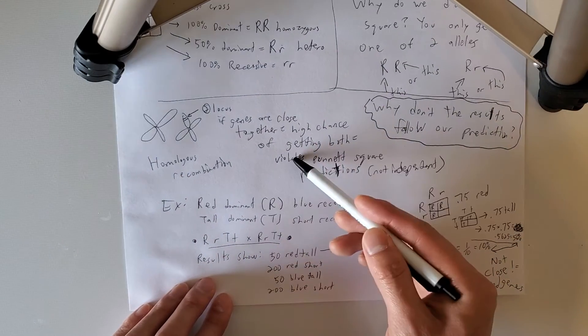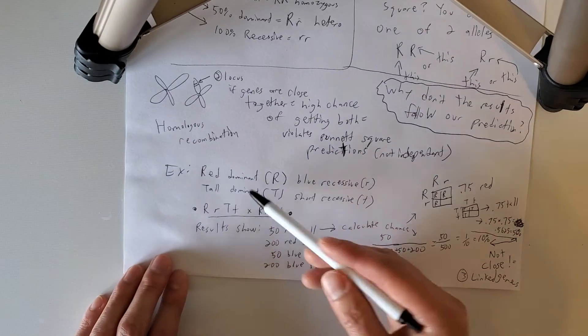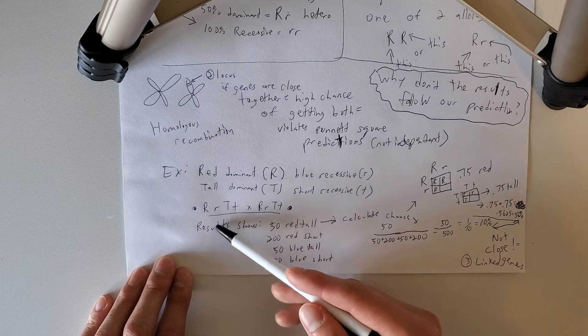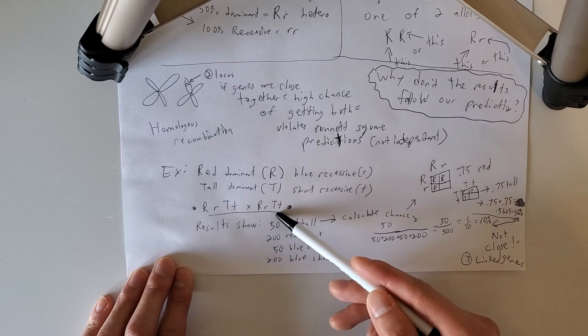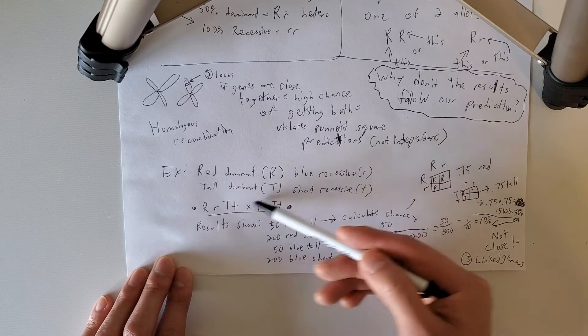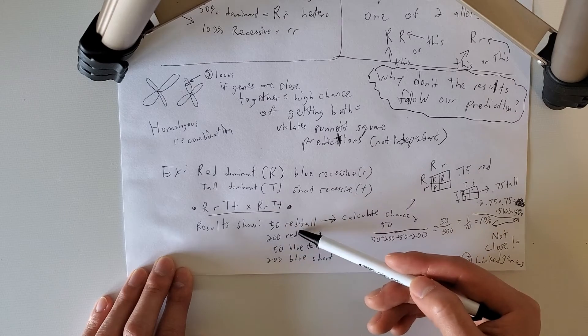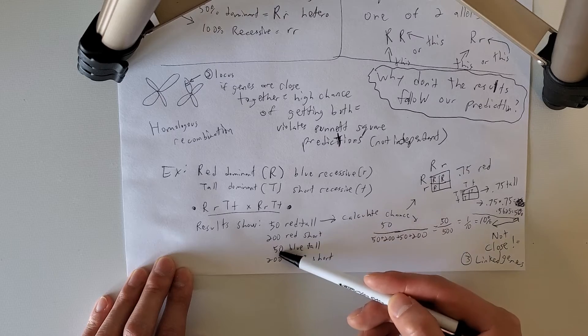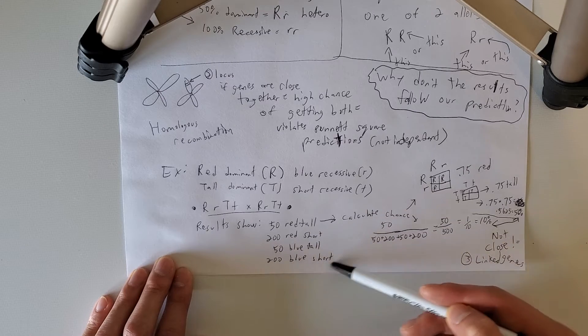So let's look at an example that'll help clarify this. Let's pretend red is dominant, tall is dominant. So here's one parent, and here's another parent. And then you get these results after you make them have babies. So 50 of them are red tall, 200 of them are red short, 50 are blue tall, 200 are blue short.